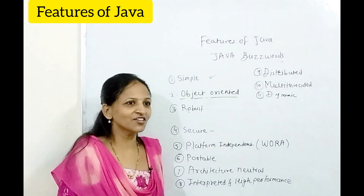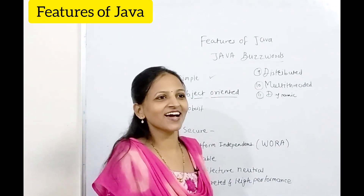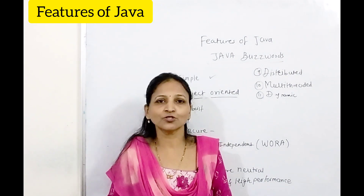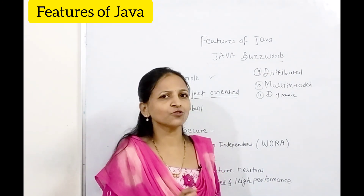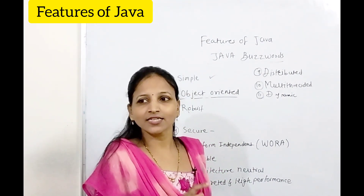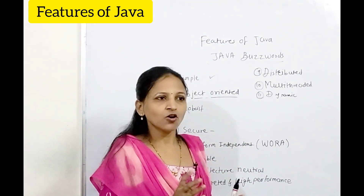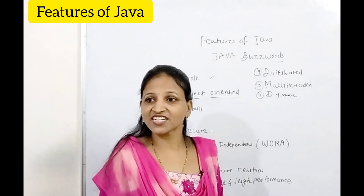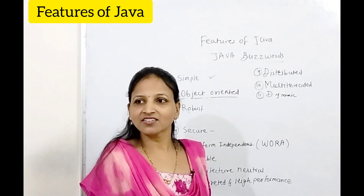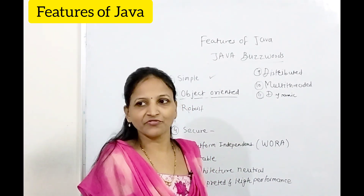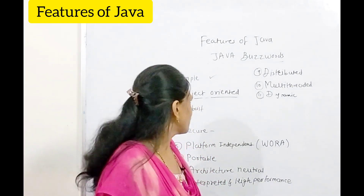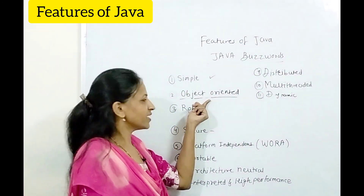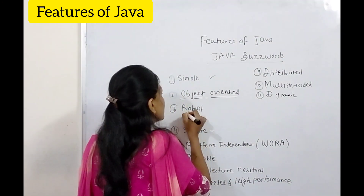The next feature is object-oriented. Object-oriented means everything has to be written in a class. One more point: Java supports all object-oriented functionalities like class, object, inheritance, encapsulation, abstraction, and polymorphism. That's why Java is called an object-oriented language.